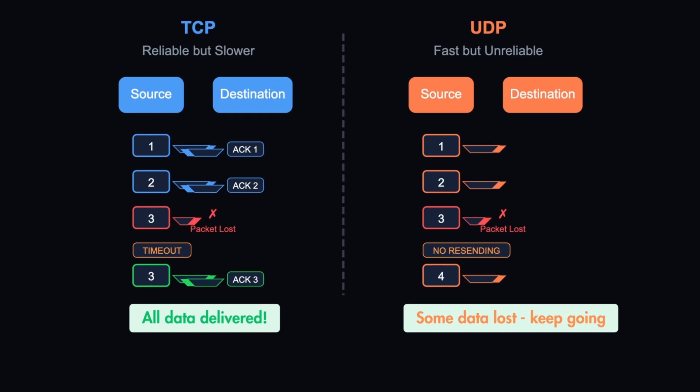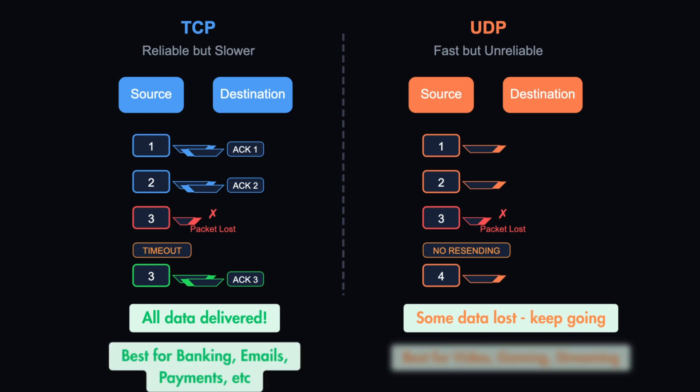When choosing between the two, the key question is: if you need the connection to be safe and reliable, go with TCP; if you need it to be fast and lightweight and some data loss is acceptable, go with UDP. TCP is best for banking, emails, and payments. UDP is mostly used for video streaming, gaming, and so on.